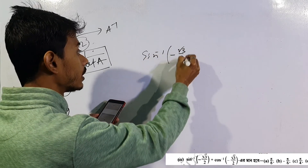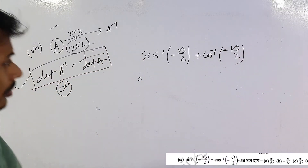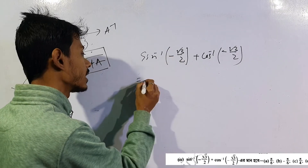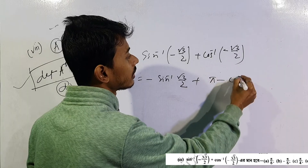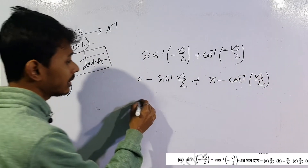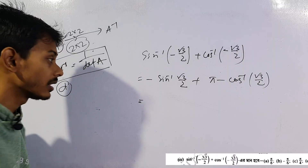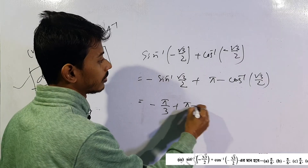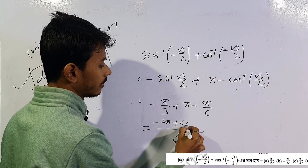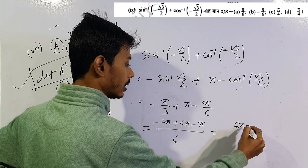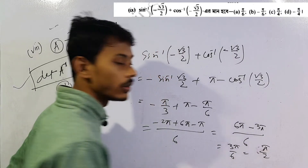sin inverse of √3/2 plus cos inverse of √3/2. Simple: sin inverse of √3/2 is sin 60° which is π/3. Minus, sorry, plus cos inverse of √3/2 is π/6. That is π/3 + π/6 = 2π/6 + π/6 = 3π/6 = π/2. So the answer is π/2.